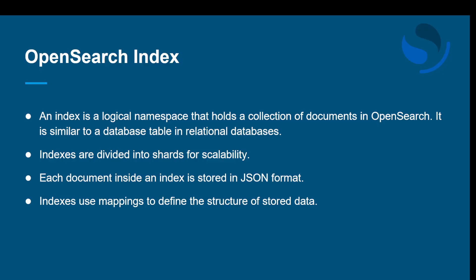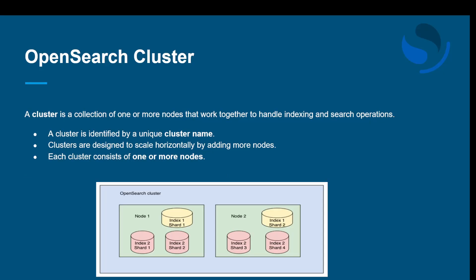Indexes are divided into shards for scalability and better performance. Each document inside the index is stored in JSON format. Index also uses mapping to define the structure of the stored data, which helps to search the data easily when proper mappings are in place. That's all about index.